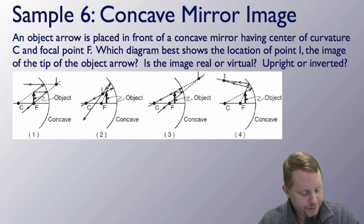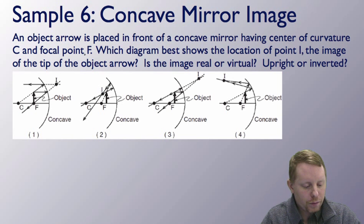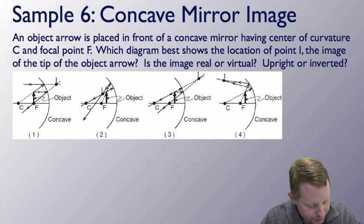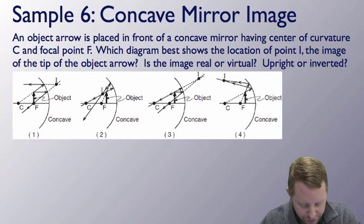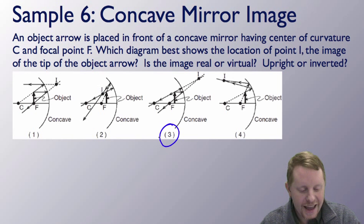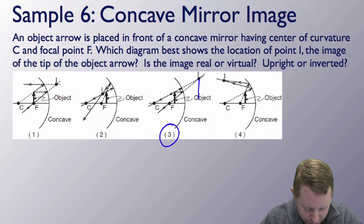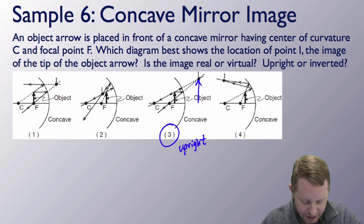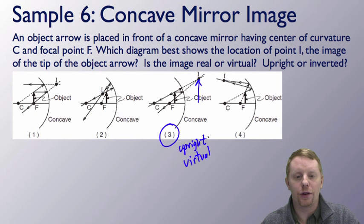An object arrow is placed in front of a concave mirror having center of curvature C and focal point F. Which diagram best shows the location of point I, the image of the tip of the object arrow? Is the image real or virtual, upright or inverted? Looking at the ray tracing diagrams, option 3 is correct — it shows a light ray coming in parallel through the focal length and a ray through the center of curvature that continues straight back. With the object inside the focal point on a concave mirror, the image is upright, magnified, and it must be virtual — the light rays don't actually converge at the image.